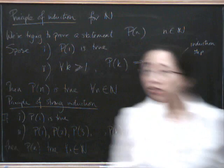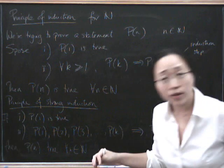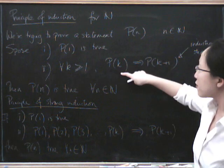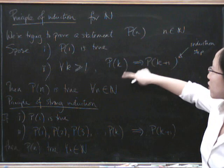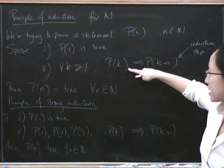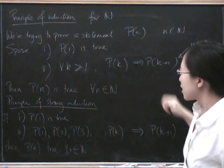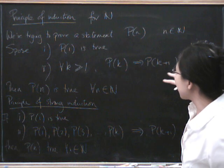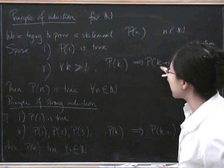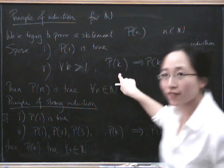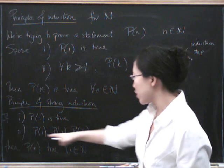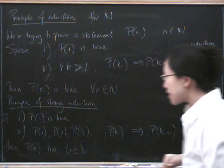So in fact, these two are equivalent because, of course, if you've got this case, then you deduce that P(N) is true for all N up to N. In which case, if you can deduce this from P(K), you can certainly deduce it from all the P(1)s up to P(K).